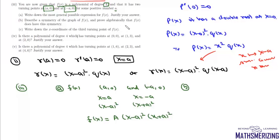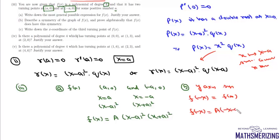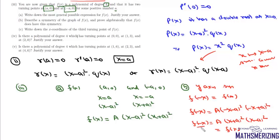For part b, we describe the symmetry of f(x) and prove it algebraically. For y-axis symmetry, f(-x) should equal f(x). Computing f(-x) = A·(-x - a)²·(-x + a)². Taking out -1 from each factor: (-1)² = 1, so f(-x) = A·(x + a)²·(x - a)² = f(x). Therefore f(-x) = f(x), confirming y-axis symmetry.